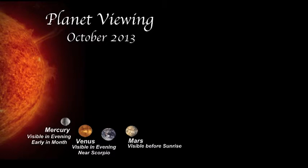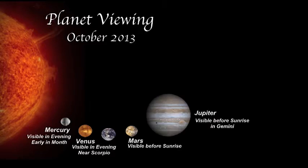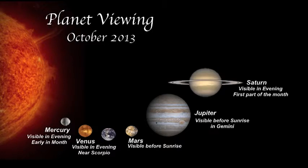Mars will be in the pre-dawn sky all month, rising a few hours before sunrise. Jupiter will be in the sky before sunrise in the constellation Gemini.